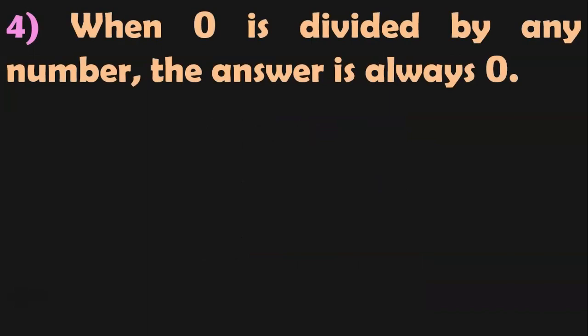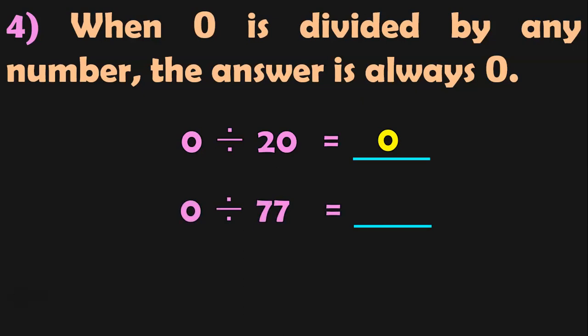The fourth property: when 0 is divided by any number, the answer is always 0. For example, 0 divided by 20 — 20 into 0 gives 0, so the quotient is 0. Another example: 0 divided by 77 is 0. And 0 divided by 398 is also 0. When you divide 0 by any number, the quotient is always 0. That is your fourth property of division.